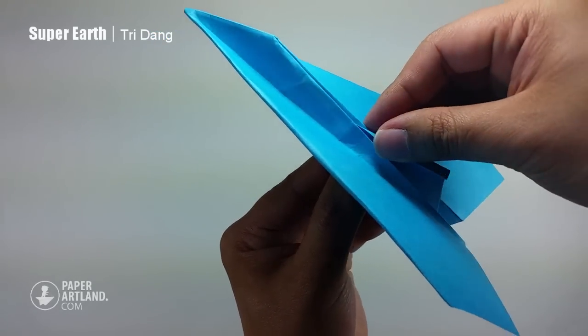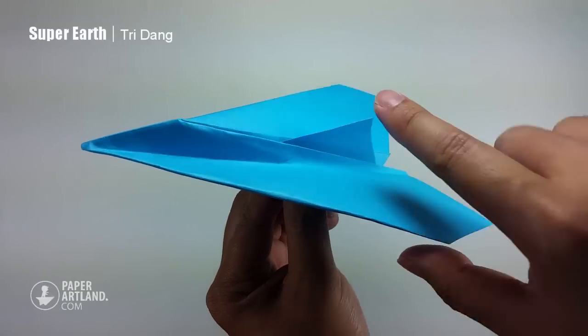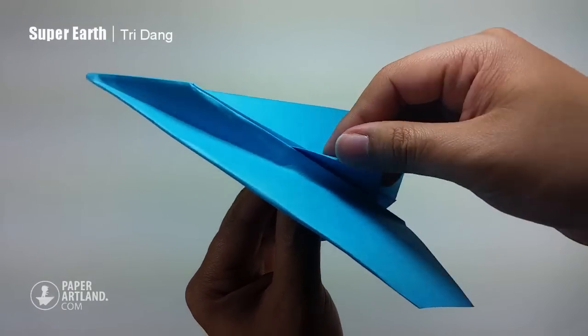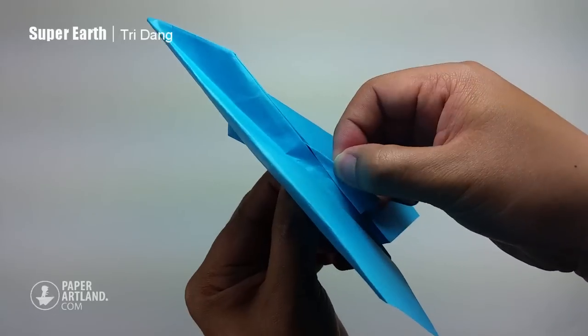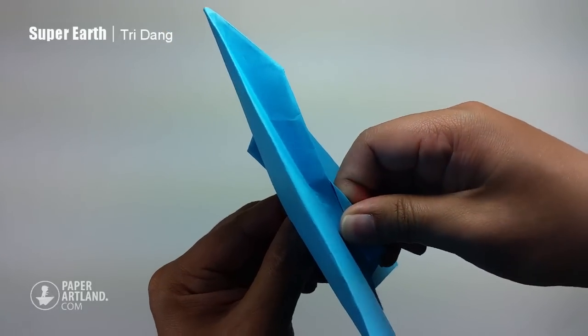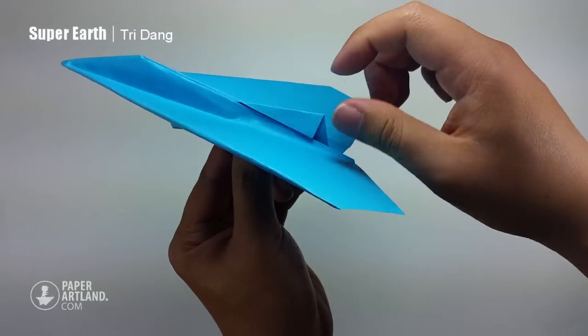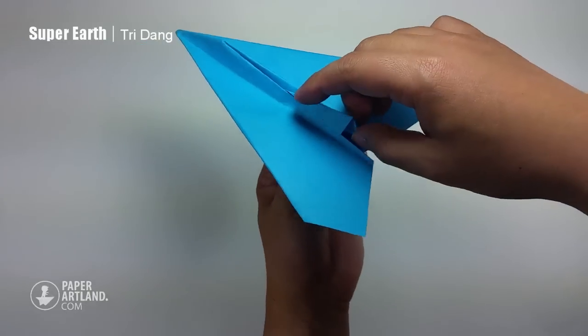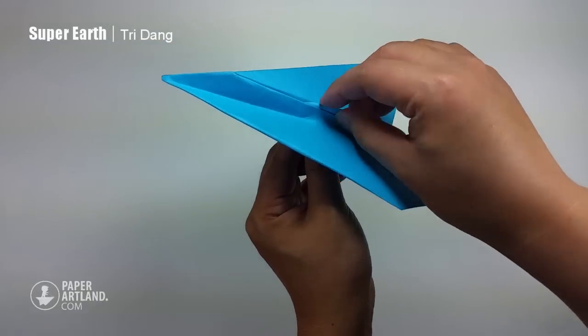I'll fold the stabilizer this way. You can see this edge here. It matches to the body. Put it down like this. And repeat the same fold. Just fold it to the other side to make a crease.